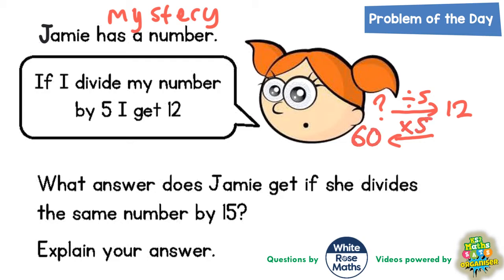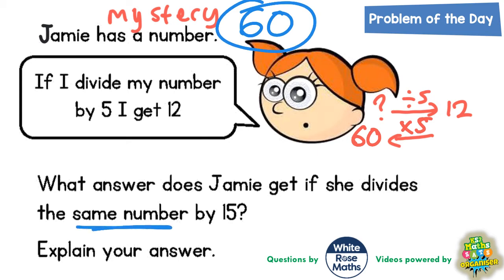So Jamie's mystery number that she started with must have been 60. Now the question also asks: what answer does Jamie get if she divides the same number — that same 60 — by 15? So in other words, what is 60 divided by 15?